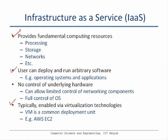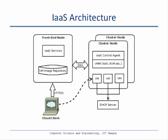For example, users may not be able to change the power modes of the underlying physical machine. An IaaS cloud setup typically consists of a cluster of machines. One machine is referred to as the front-end node and the remaining ones are called worker nodes or cluster nodes. On each cluster node you will have some type of virtualization software installed, as well as a piece of software referred to as an IaaS control agent.